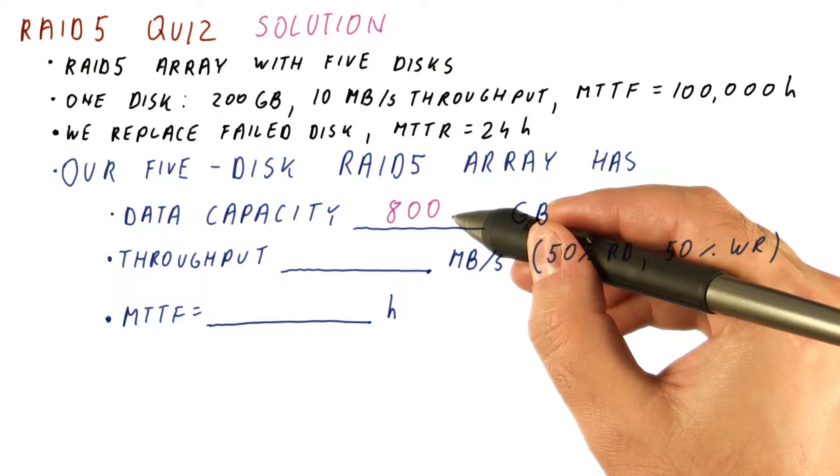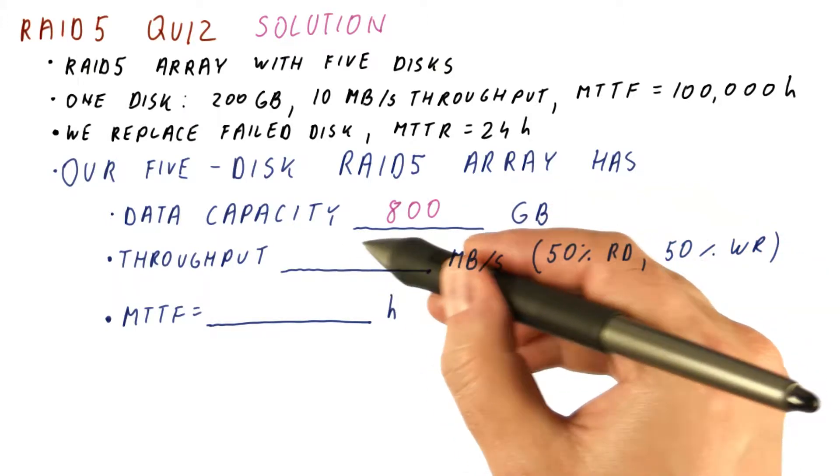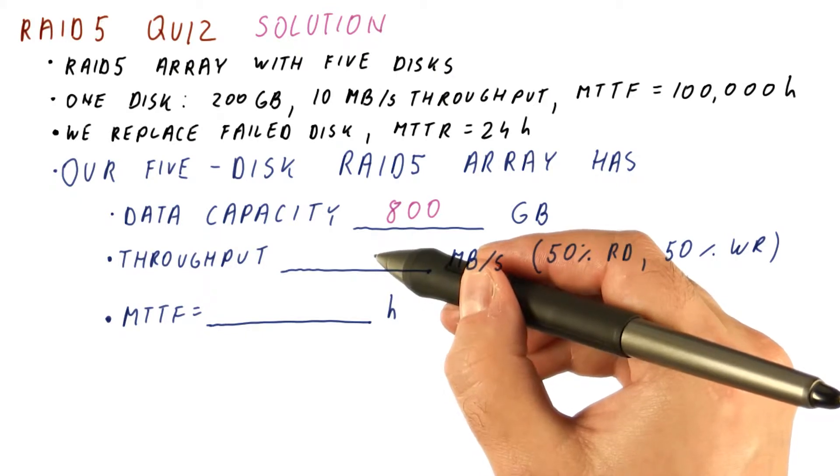It's just that this parity now is distributed among the five disks. The throughput for the five disk array, however, is much better than for RAID 4.